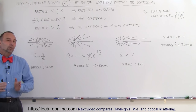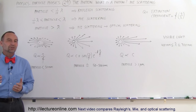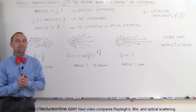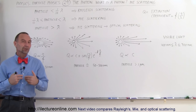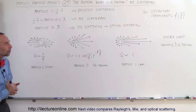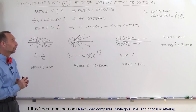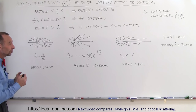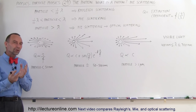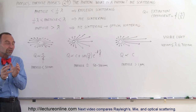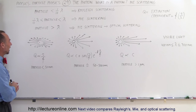Welcome to Electron Online. In our quest to understand photons better, we're going to talk about what we call Mie scattering. In a previous video, we already looked at Rayleigh scattering, but now we're going to look at Mie scattering. There are three different regions of the ratio of particle size to photon size where we have different kinds of scattering.